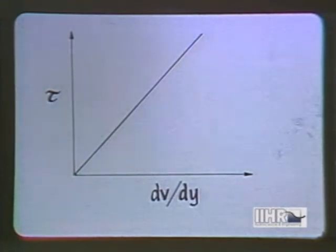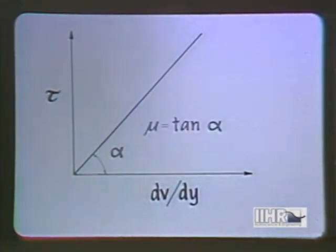If the measurements of shear stress and rate of angular deformation were plotted against each other, for what is known as a Newtonian fluid, such as water, mercury, or air, all points would fall on a straight line, the constant slope of which would represent constancy of the viscosity.